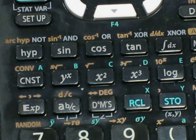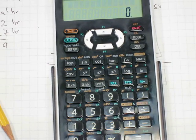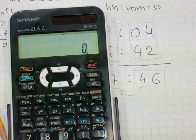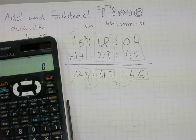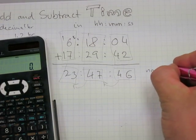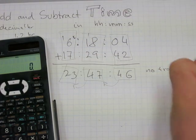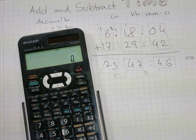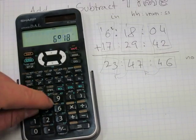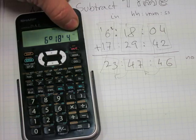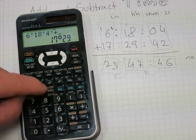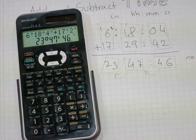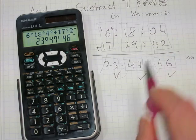The calculator will just carry degrees on and never trade them for anything else, so you might need to manually trade hours into days. But here we have 23 hours, so no trading up is necessary. Let's see how this works: press 6, DMS, 18, DMS, 4 — the calculator places the format automatically. Then plus, 17, DMS, 29, DMS, 42, equals: 23 ✓, 47 ✓, 46 ✓.